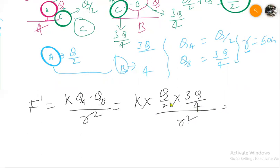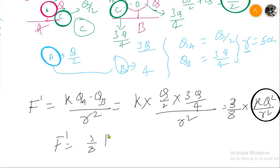So this starts to solve. So now we can get 3 by 8 into K Q squared by R squared. So this was the original force when both at the equal charge were acting. The new force will be 3 by 8 times the original force.